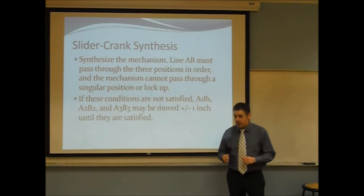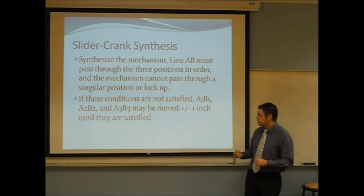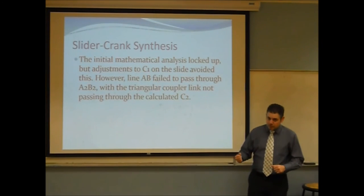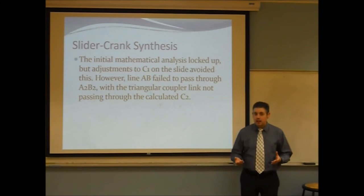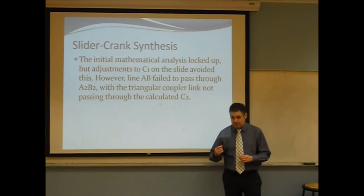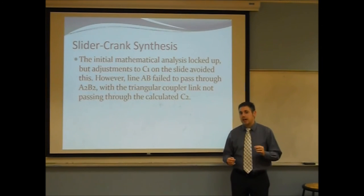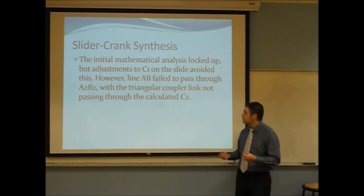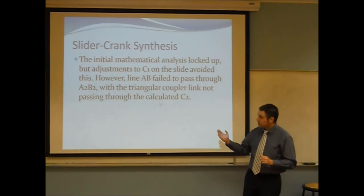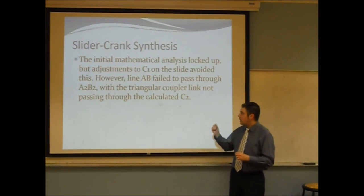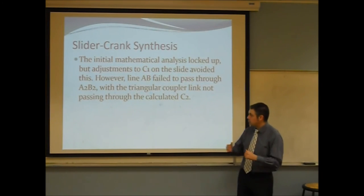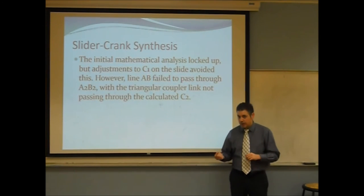If these conditions could not be satisfied, we were allowed to move the three positions by multiples of plus or minus one inch until they were satisfied. Now, our initial mathematical analysis resulted in a lockup. However, we were able to make adjustments to point C1 to avoid that from happening. Point C1 was a location on the circle of slides. Any point on the circle of slides could have been chosen for C1, and C1, along with points A1 and B1, formed the coupler. However, even once we did this and avoided the lockup, line AB still failed to pass through the second position A2B2, and the triangular coupler did not pass through our calculated location for point C2.